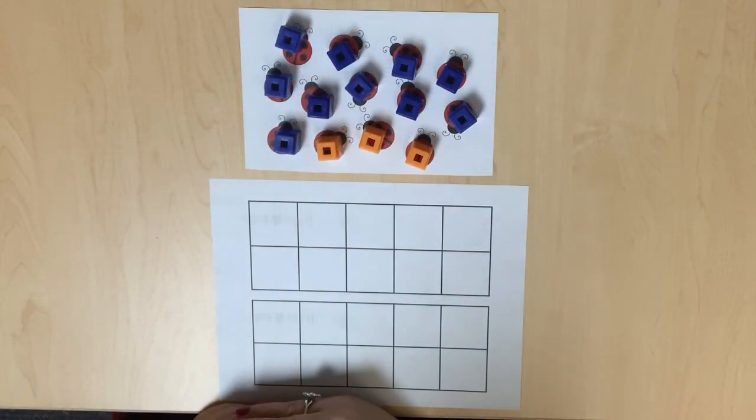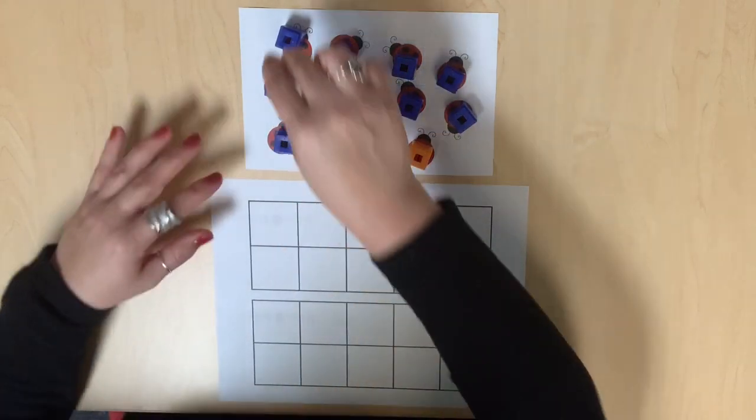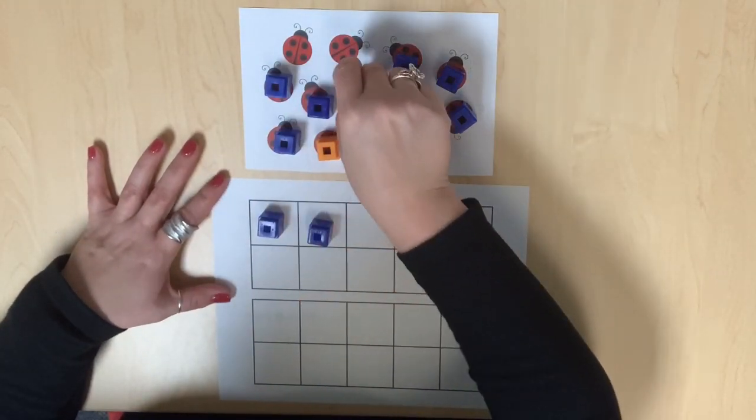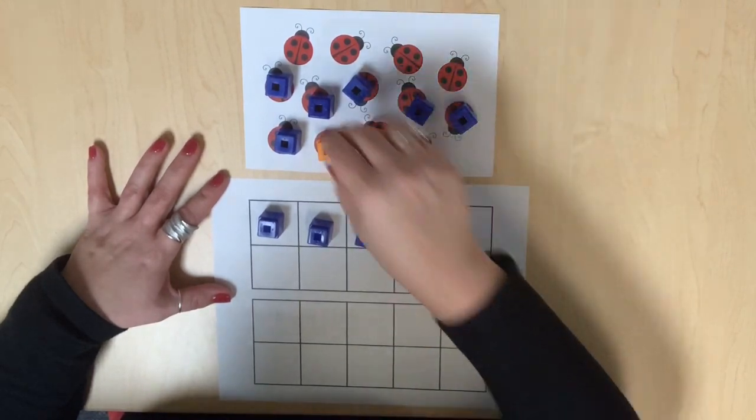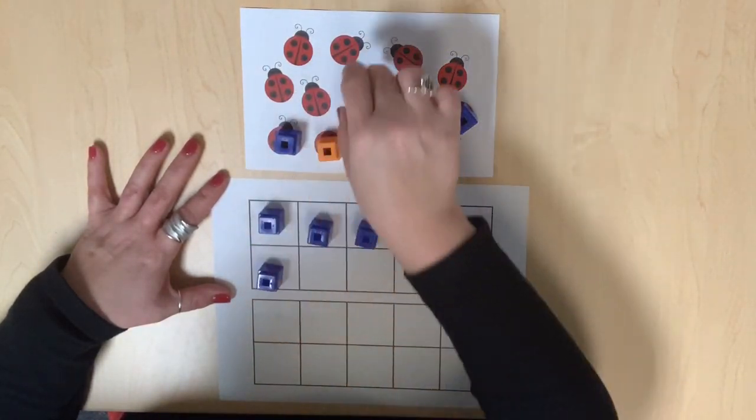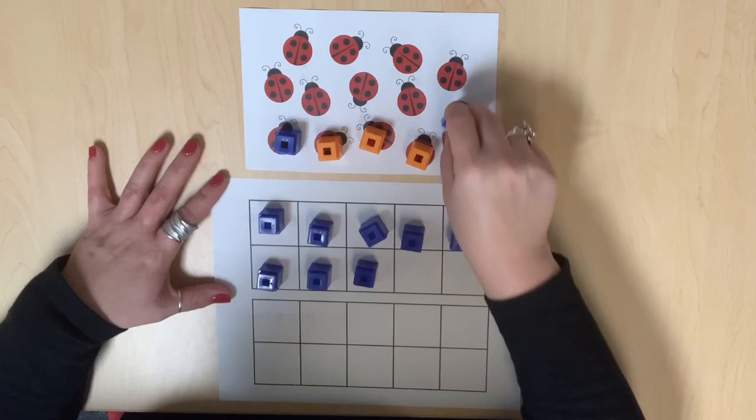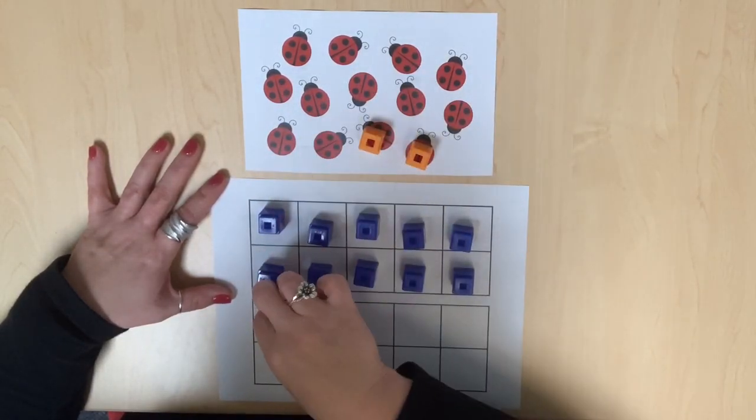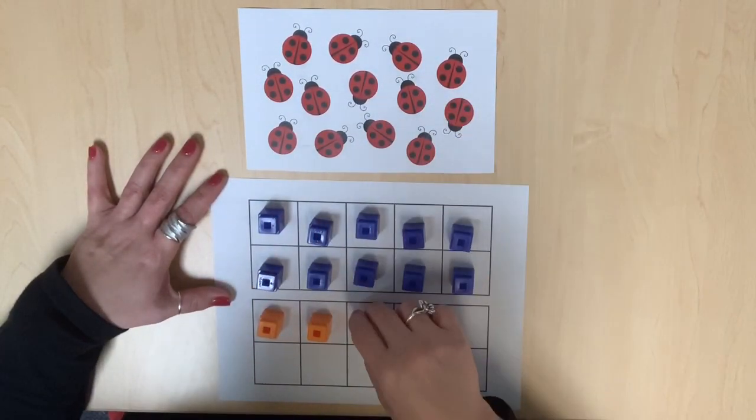We can also count and represent our objects by organizing them on a double ten frame and applying what we know about ten to determine our total quantity. A double ten frame helps us to count and represent values more easily as the objects are in an organized arrangement.